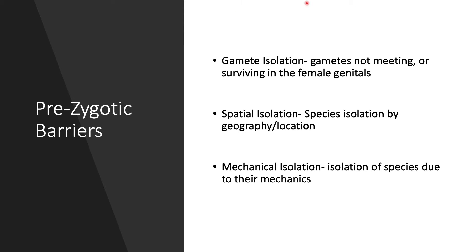The first prezygotic barrier is gametic or gamete isolation. This is where gametes don't meet, or they won't survive in the genitalia. For example, in certain species of sea urchins, males emit sperm that can enter a female, but if that sperm enters the wrong species, it will not survive in her genital tract and will not fertilize the egg. It's like a reaction from the female gamete to only accept sperm from her own species.